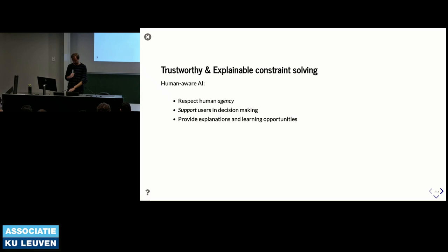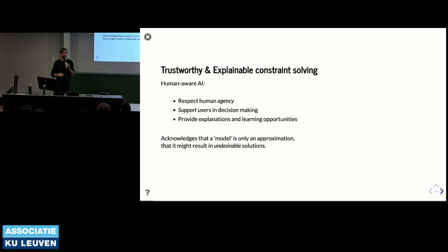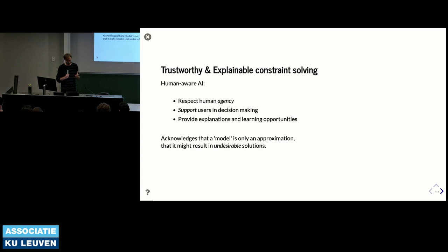Another key point is that even though we use exact solvers that compute optimal solutions guaranteed to satisfy all constraints, when we model a problem it is still only an approximation of everything happening in the real world. Because it is a model, the result might be undesirable, the model might be incomplete, or there could be surprising interactions within it.